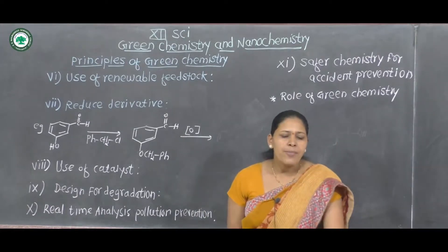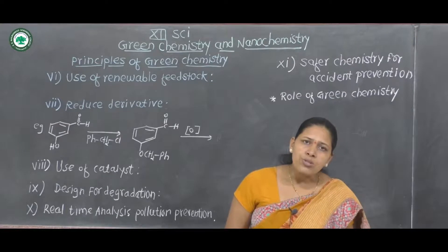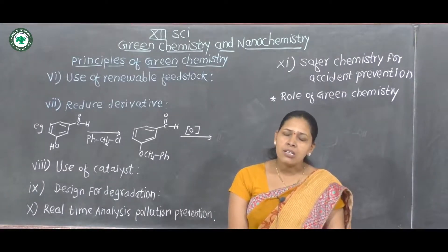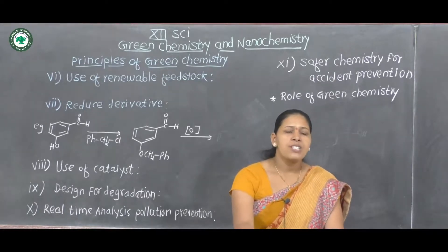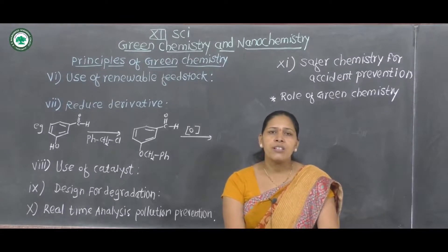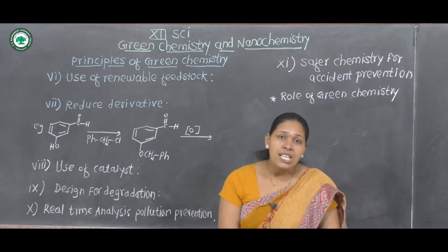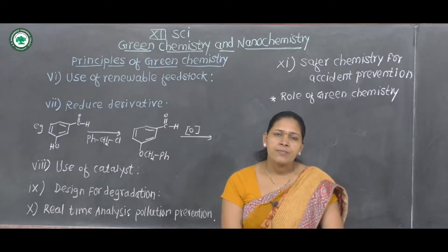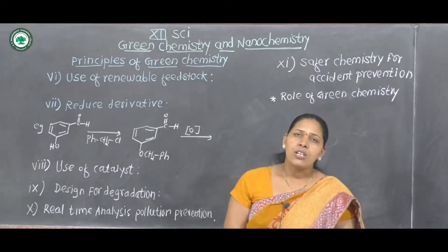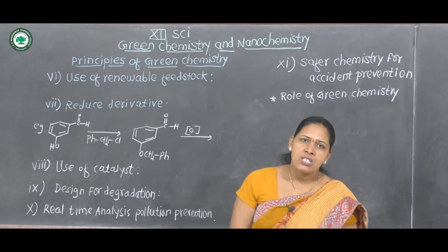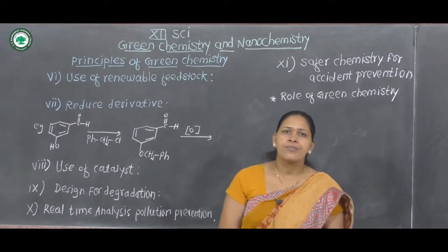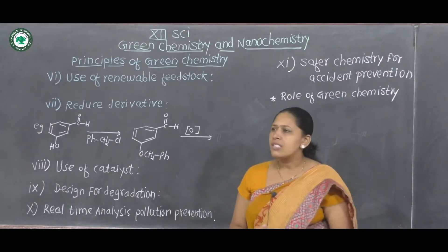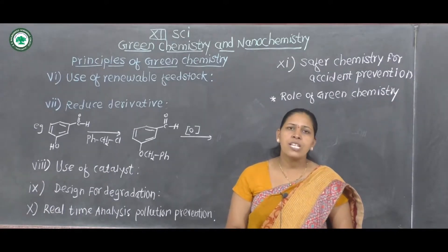Green chemistry plays an important role in reducing pollution — this is one of its most important aims. We must adopt green chemistry to reduce pollution levels in the environment. The second role of green chemistry is to protect the ozone layer in the stratosphere, which is essential for survival of life on Earth. The ozone layer protects living things from ultraviolet radiation from the sun, protecting our health.